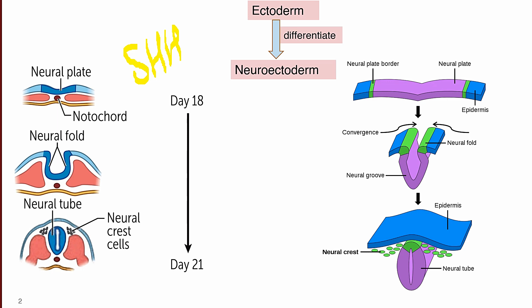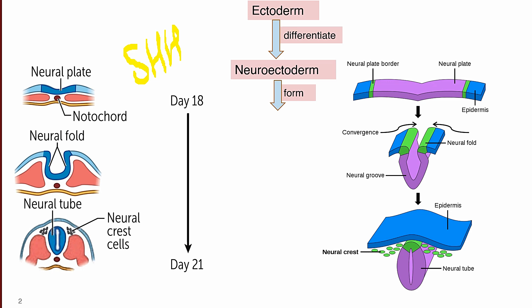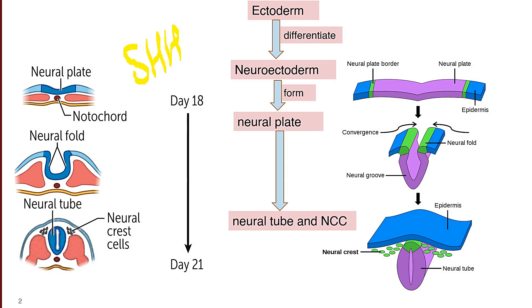This sonic hedgehog gene produces the protein known as sonic hedgehog protein, which induces differentiation of this ectoderm into neural ectoderm. So a neural plate gets formed. This neural ectoderm forms the neural plate, and the neural plate eventually forms the neural tube and neural crest cells.